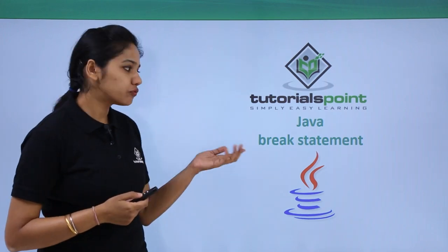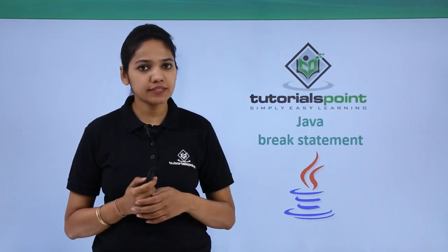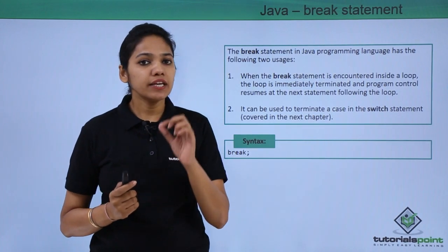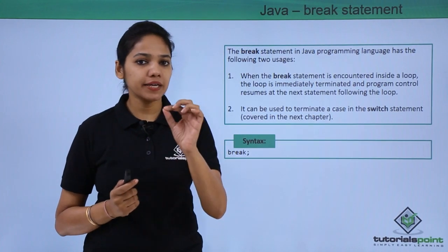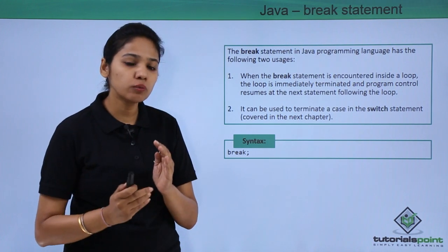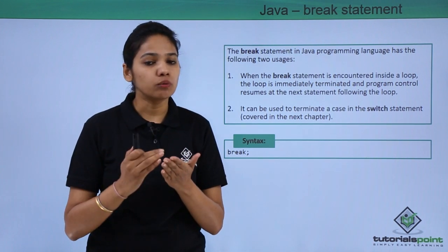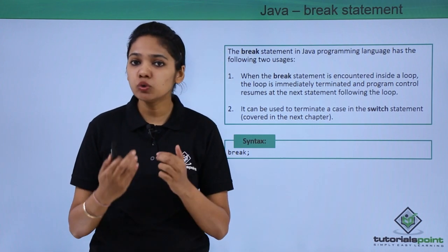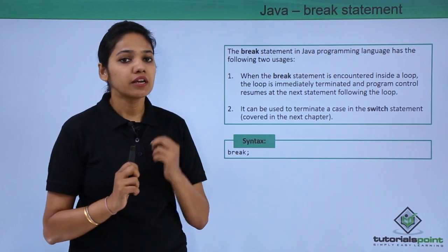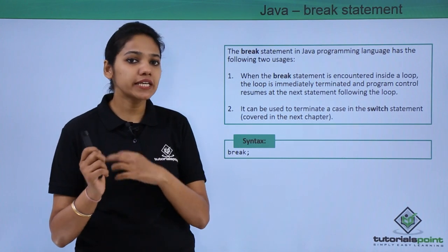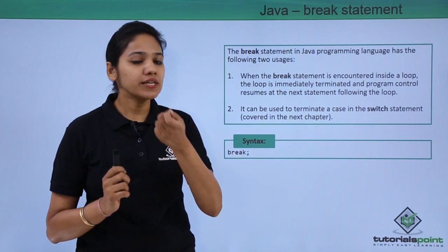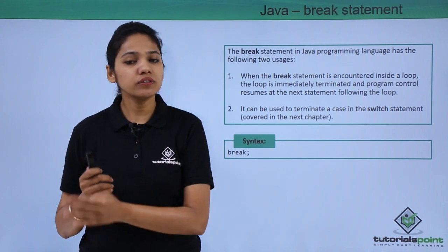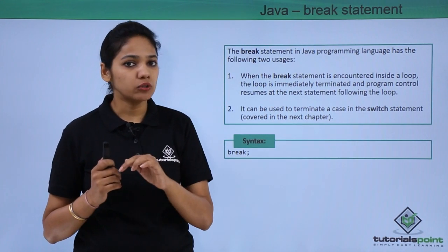Let us learn about the first control statement which is a break statement. What a break statement does is that if a loop encounters a break keyword anywhere in the loop, it will terminate that loop. A break keyword can be used in any kind of loop and once it encounters, it will terminate the loop, come outside of it and execute the rest of the statements outside the loop.